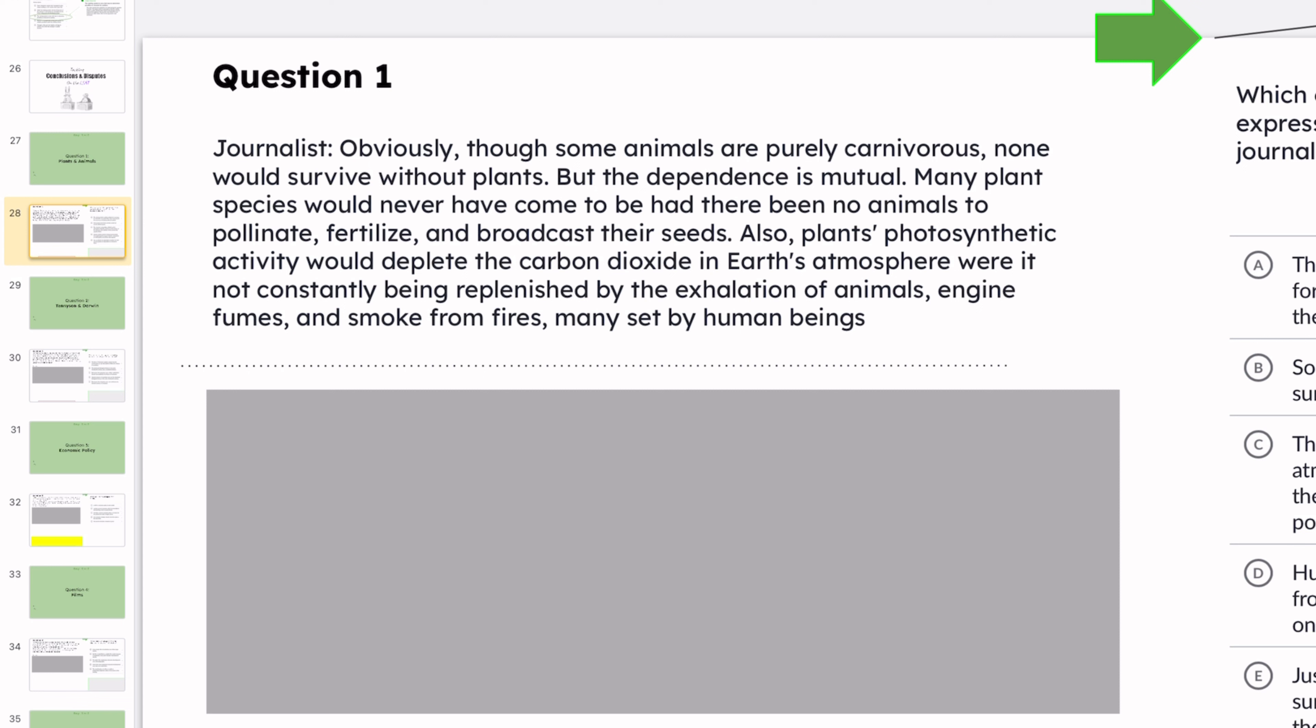All right. So the journalist says, obviously, though some animals are purely carnivorous, none would survive without plants. But the dependence is mutual. Many plant species would never have come to be had there been no animals to pollinate, fertilize, and broadcast their seeds. Also, plants' photosynthetic activity would deplete the carbon dioxide in Earth's atmosphere were it not constantly being replenished by the exhalation of animals, engine fumes, and smoke from fires, many set by human beings. I guess that last part is wild, but here we go.